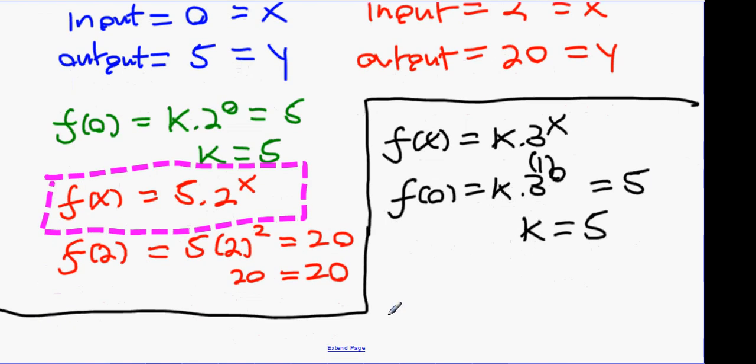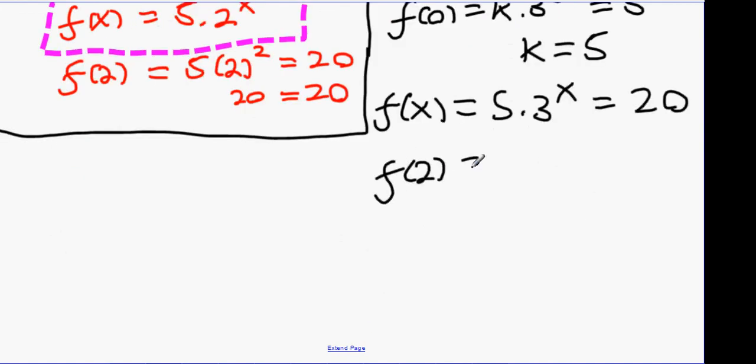Now, let's try the second one. The second one claims that when the input is 2, the output is 20. So this question is claiming that f(x) is 5 times 3 to the power of x. Pay attention, guys. Therefore, f(2) which is 5 times 3 to the power of 2 should be equal to 20. Now, what is 5 times 3 to the power of 2? Does 45 equal 20? No. See the way the last one 20 equals 20. This means that the first function was correct and the second function is wrong.